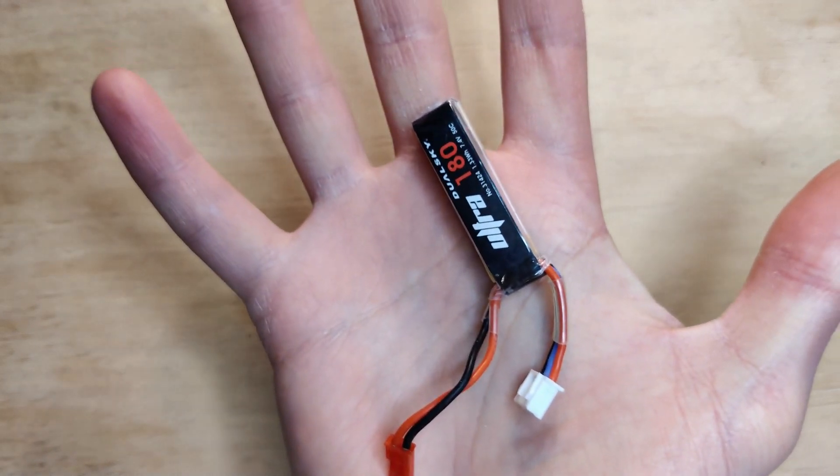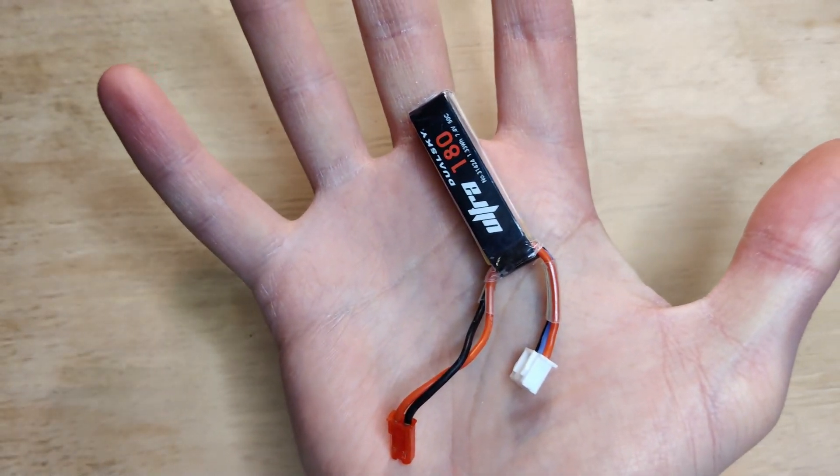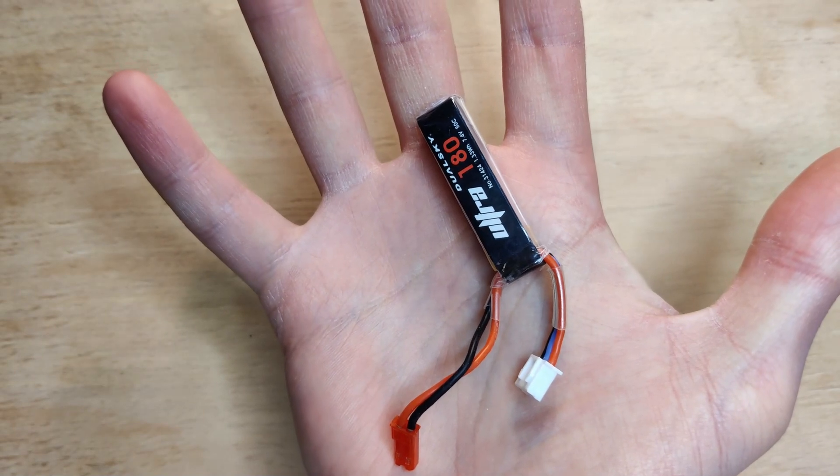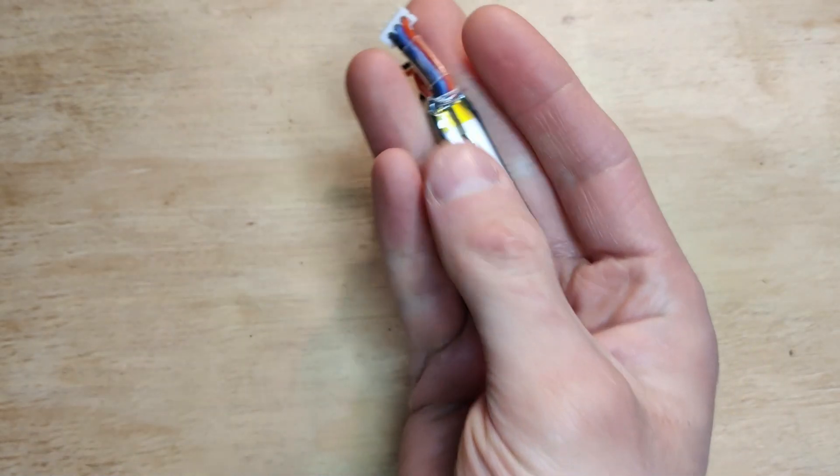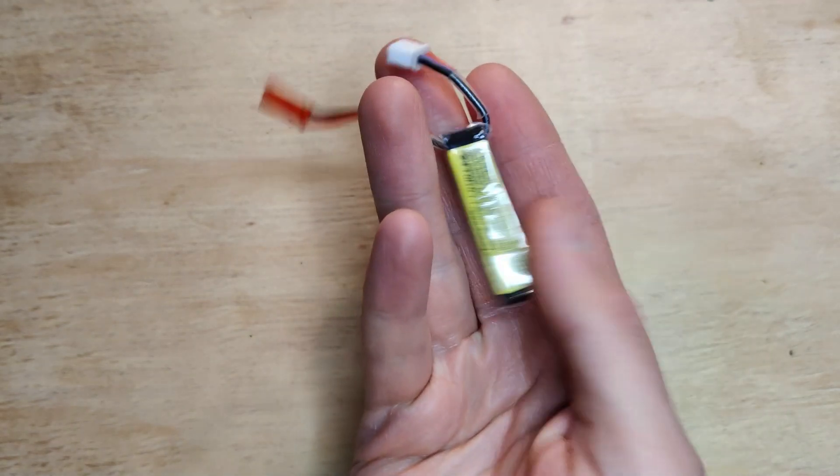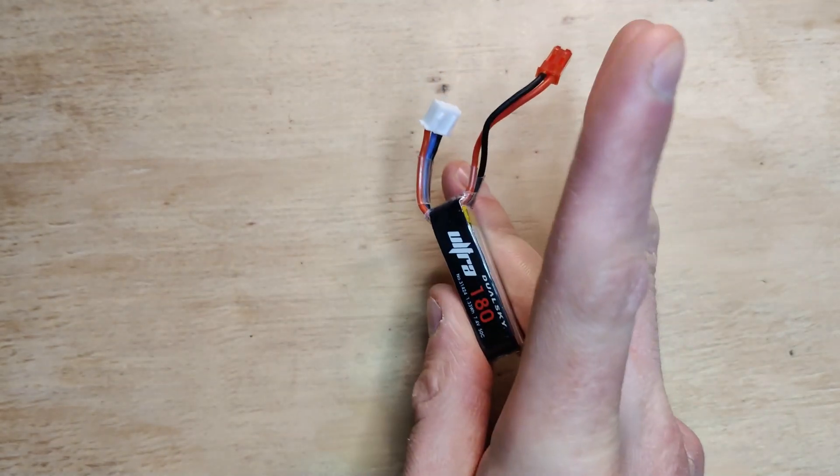And finally rounding up the parts list we have batteries, and this is where things get a little tricky. Unfortunately, there seems to be a perpetual shortage of small 2S packs that can output decent current. After much browsing, I found these DualSky 180mAh 2S packs with a pretty fantastic 50C rating.